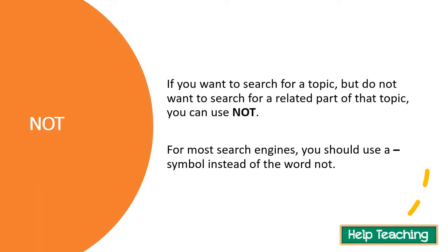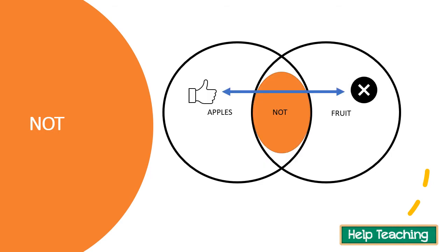The third operator is NOT. If you want to search for a topic but don't want a related part of that topic — for example, if you want to search for dogs but not Pomeranians — you can filter the results so pages mentioning Pomeranians don't show up. For most search engines, you don't type the word NOT; you use a hyphen. So if I type 'apples not fruit' or 'apples minus fruit,' I'll get results for apples but not ones related to the fruit.